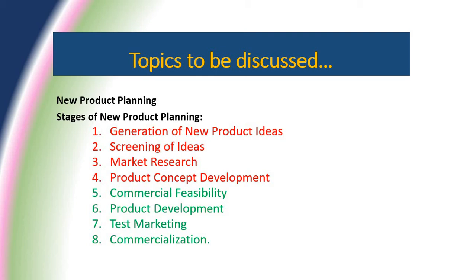There are a total of eight stages in new product planning. The first stage is the generation of new product ideas. In this first step, the product idea is created either internally or based on customer demand. As with competitors, the products and services are created by the production manager or organizations.